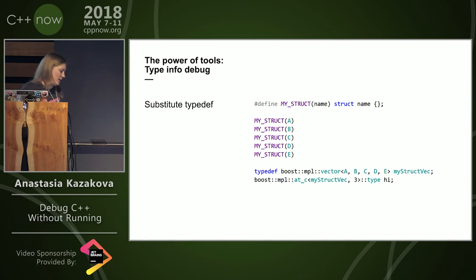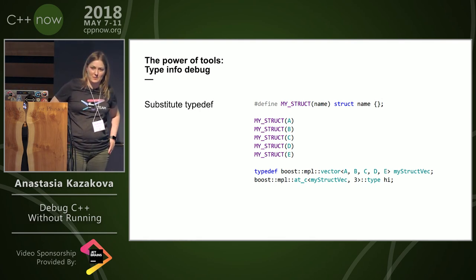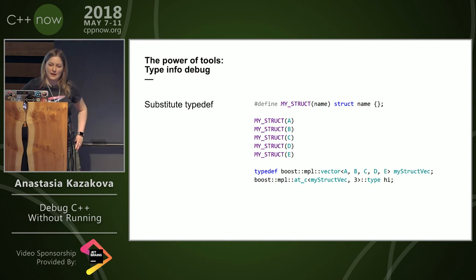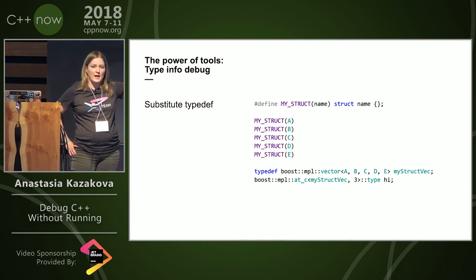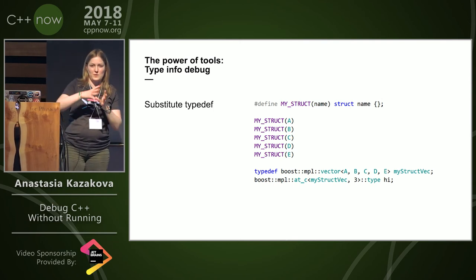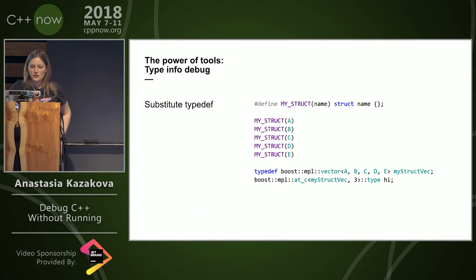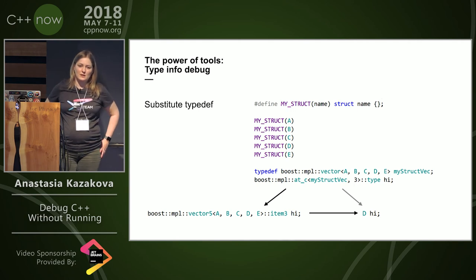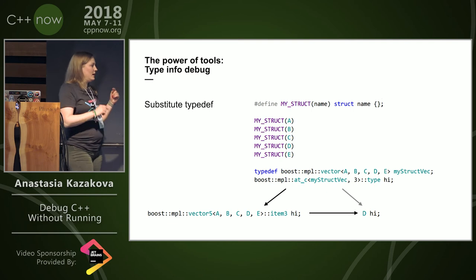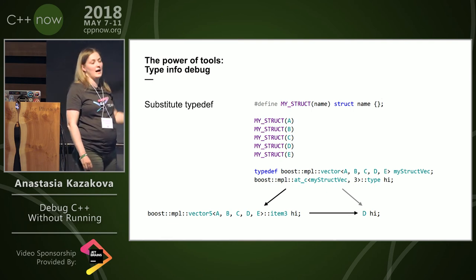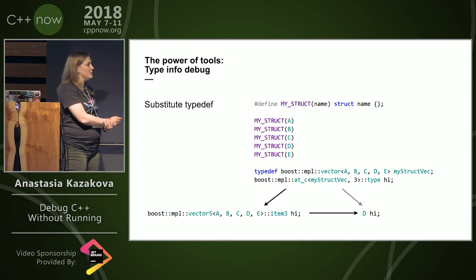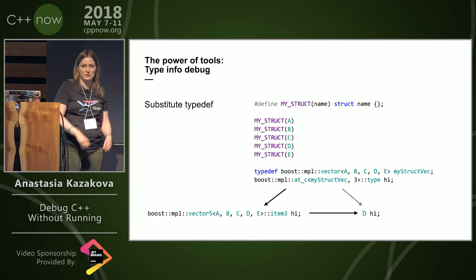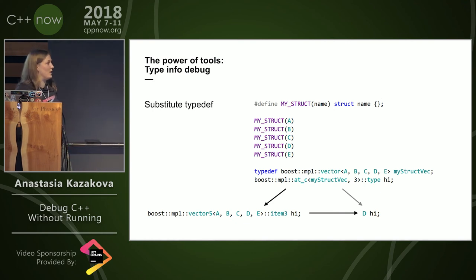Another idea: can I debug my type step by step, similar to macro substitution? Yes, you can. Here's an example where I try to understand the type of some variable using Boost.MPL. If I don't know Boost.MPL well, I can debug it by substituting type aliases step by step, getting the final result — for example, confirming that 'hi' is of type D. This is what ReSharper C++ does — they substitute the type definition in your code. The idea is very similar to macro substitution.